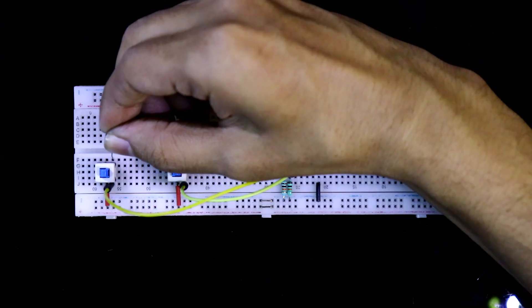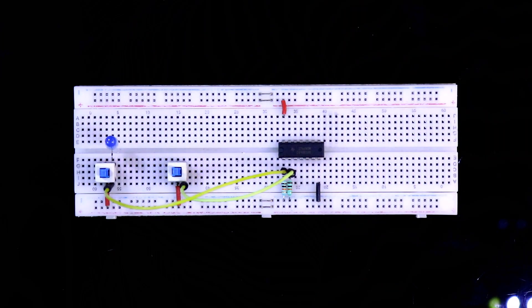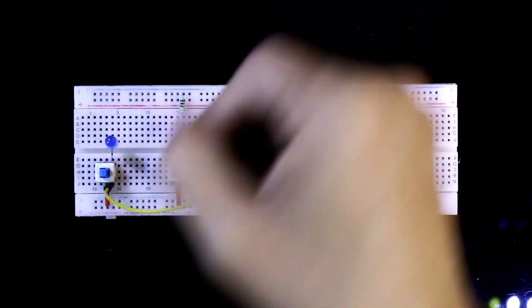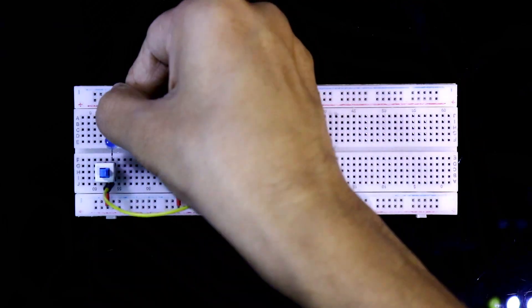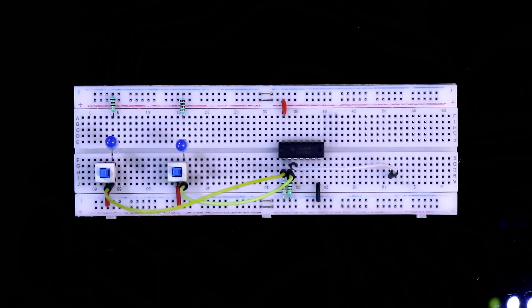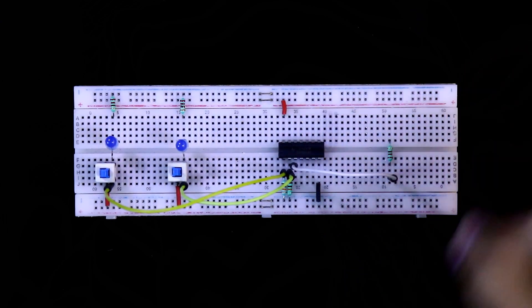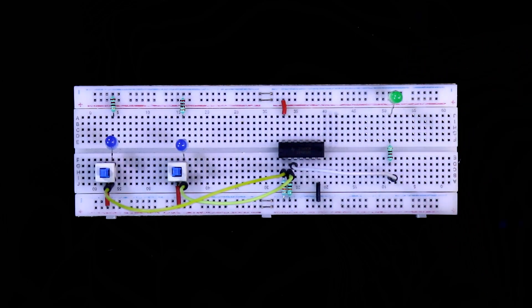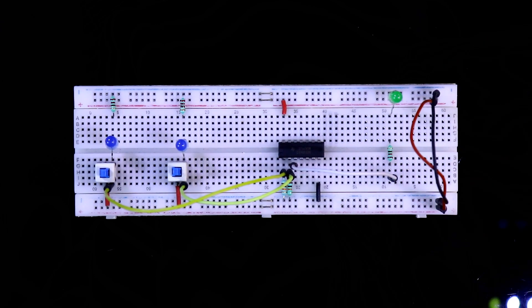So the input is connected with positive pin of the LED. And with the negative, 220 ohms resistor is connected. Pin number 3 is output. With the pin number 3, one resistor is connected. And with the resistor, positive pin of the LED is connected and negative pin is connected to the ground. Connecting both the positive and negative rails. So this is how we have completed the connection.